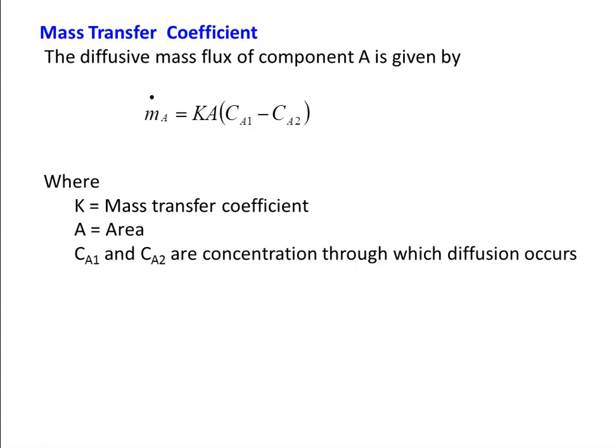The mass transfer coefficient — first definition. The diffusive mass flux of component A, the mass transfer of component A in a mixture, is given by: mass transfer rate = K × A × (Ca1 − Ca2), where K is the mass transfer coefficient, A is the area, and Ca1, Ca2 are the concentrations through which diffusion occurs.